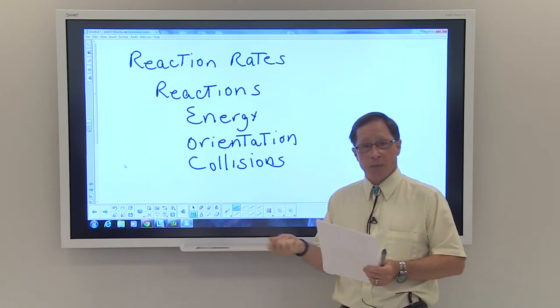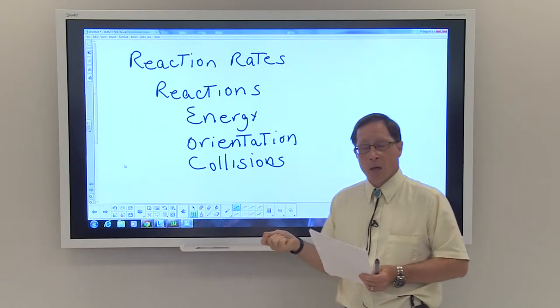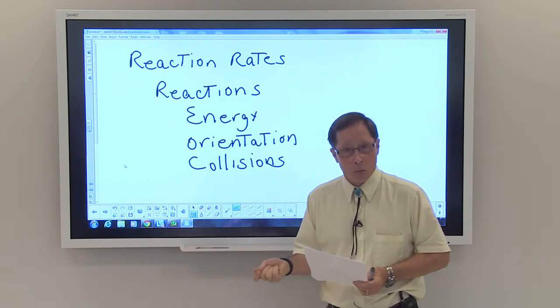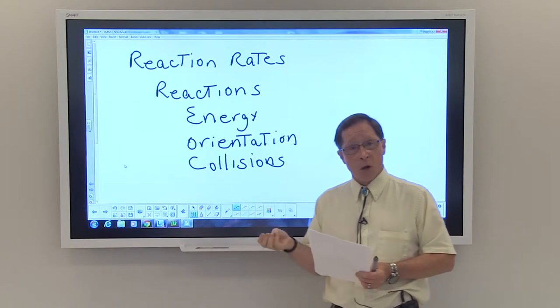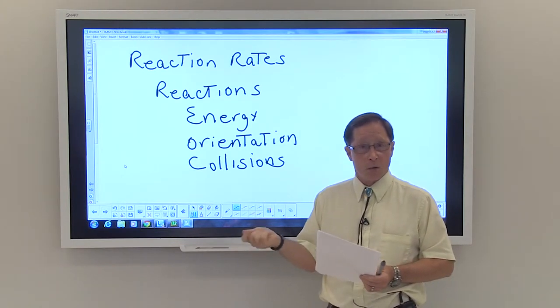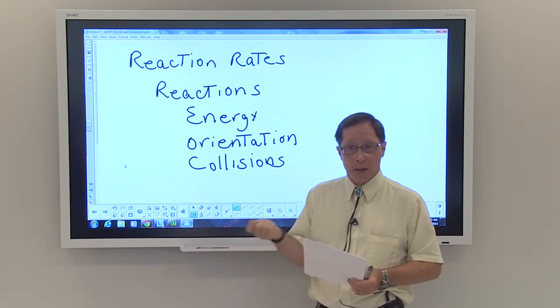The probability of the two of you hitting one another is probably not great. But if I blindfolded 20 of you and put you into this room, the probability of hitting somebody else is greatly increased. So by increasing concentration of the reactants, you increase the probability that you're going to have a connection and a reaction.